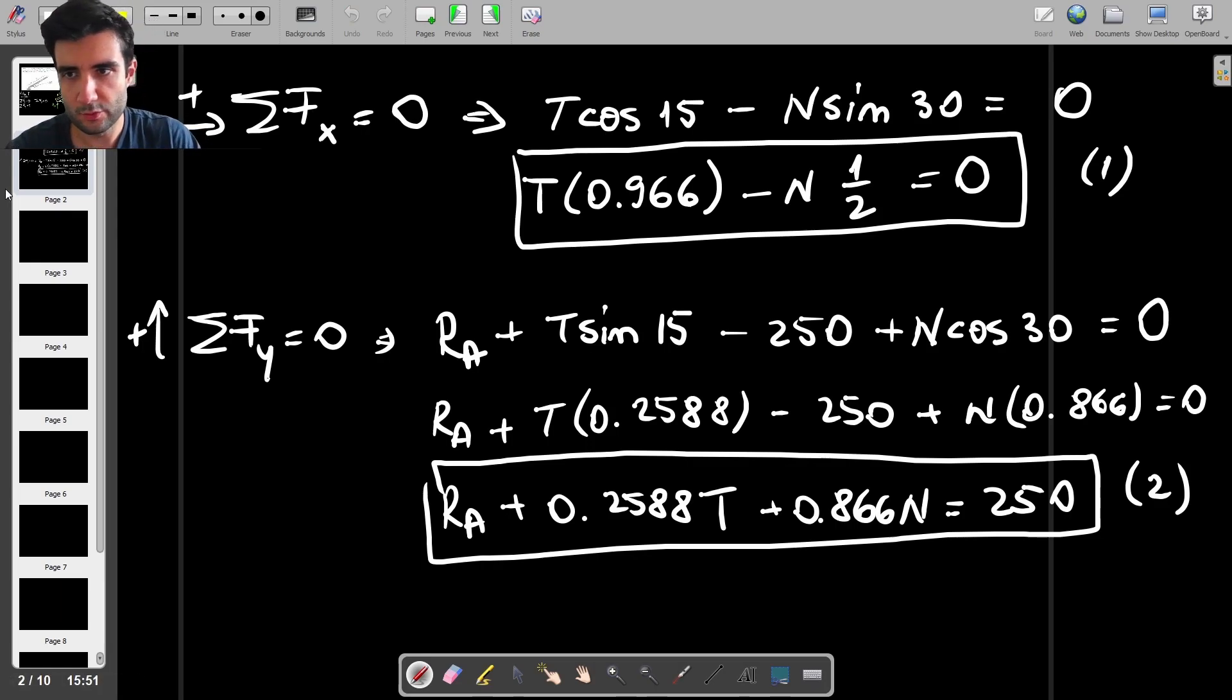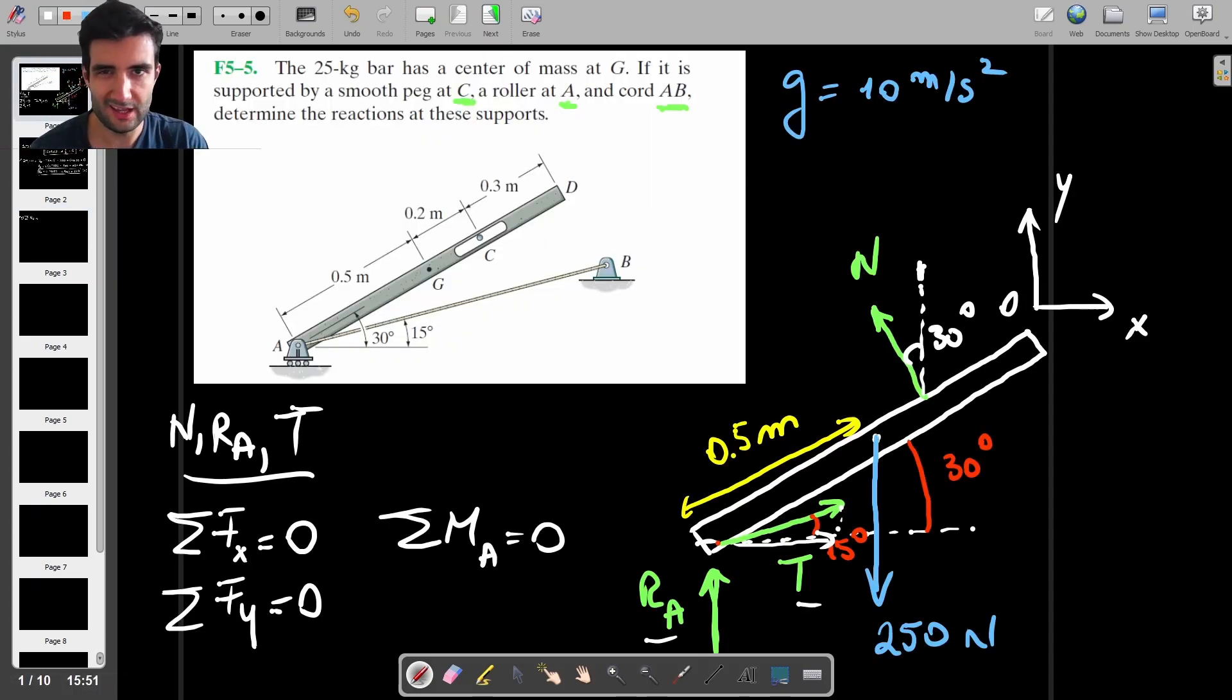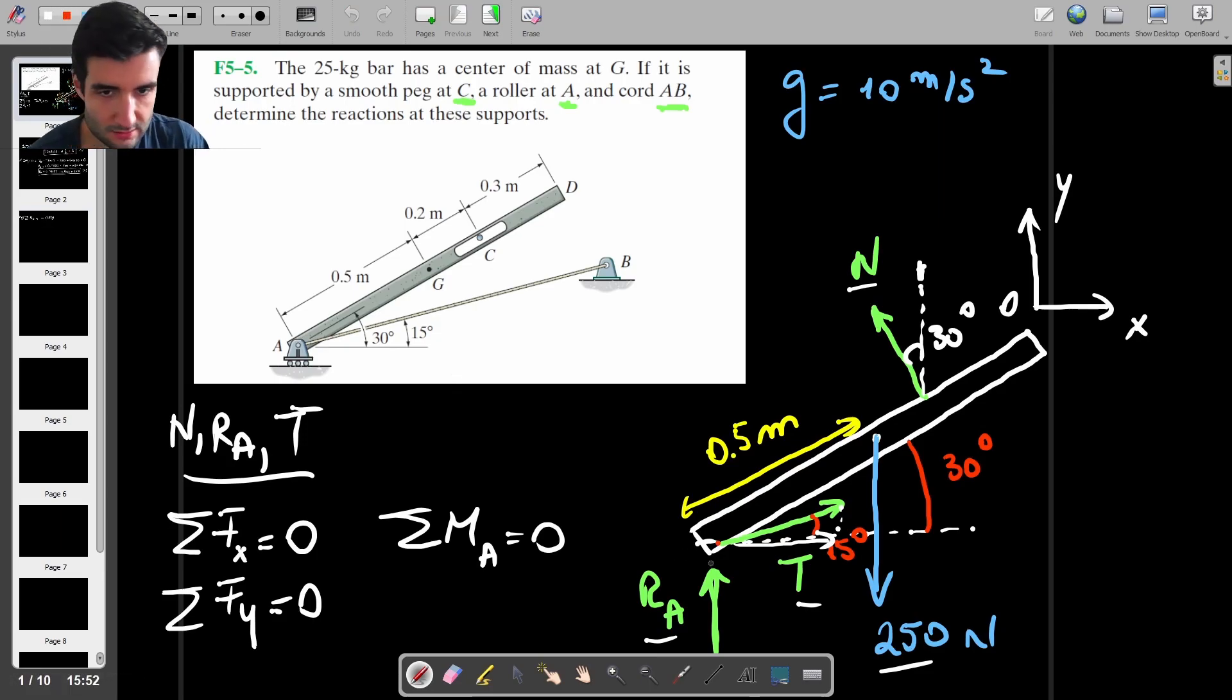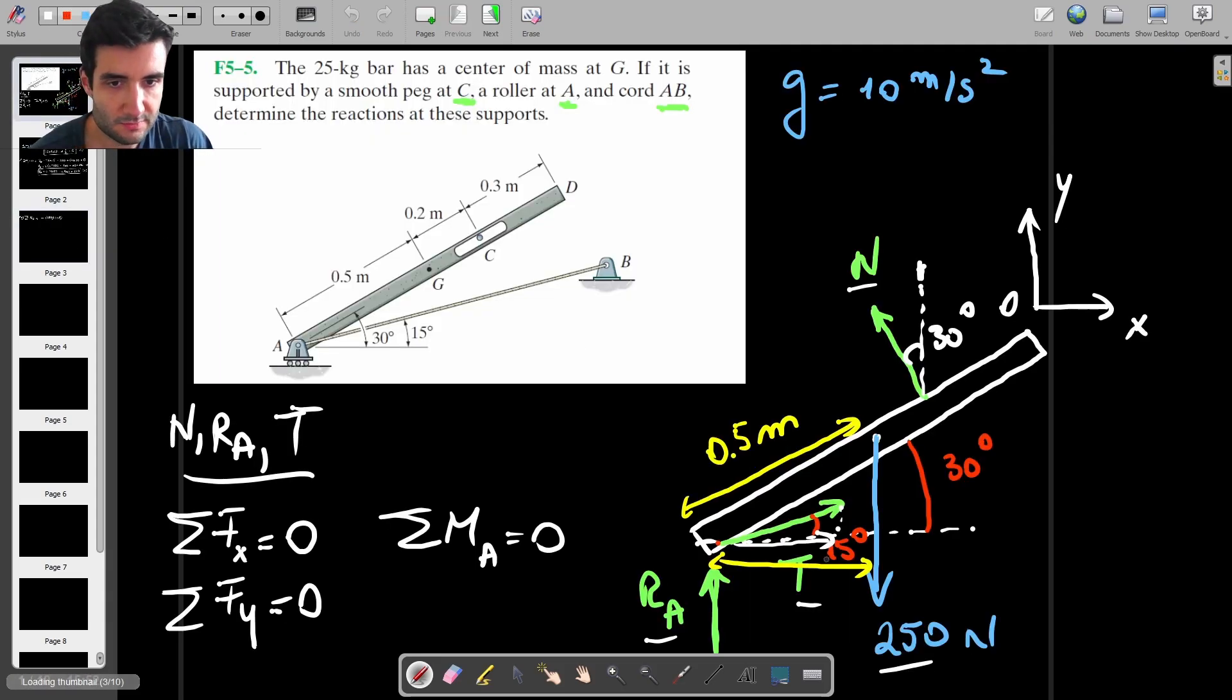And then we have one more equation which is related to moments. So if we take moments about A, I think that's a good idea because if we do that then the tension and RA are not actually going to produce any moments about point A. So we just have two things: we've got the moment due to this weight and the moment due to N. In this case we have a moment which is clockwise due to the weight, so that's going to be minus, so I have the weight which is 250 times the moment arm which is this distance, so that's 0.5 times cosine of 30.